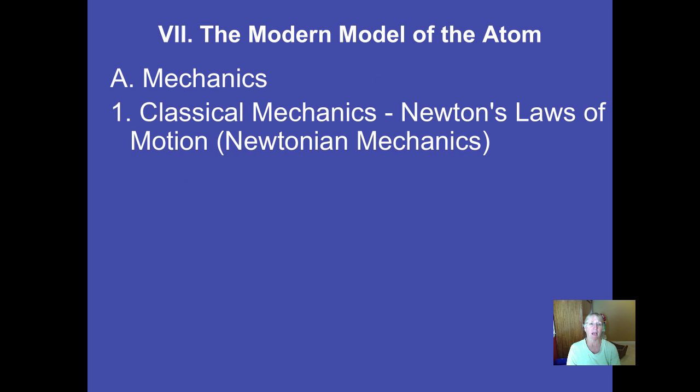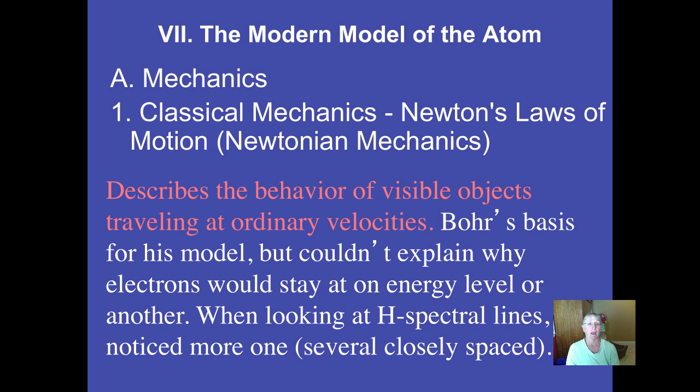In classical mechanics, that's the laws of physics that would govern when a car drives down the street, or a plane flies across the sky, or a train goes down the train tracks. Objects that you can see that are moving at normal speeds, we call that classical or Newtonian mechanics or Newtonian physics. You know some of those - for a reaction, there's an equal and opposite reaction. Those kind of laws. That works if we can see the objects and they're traveling at normal speeds.